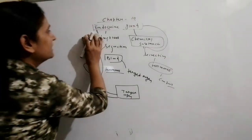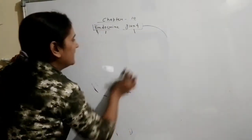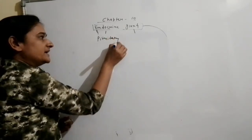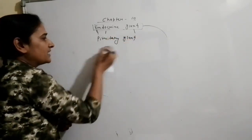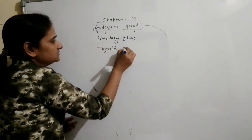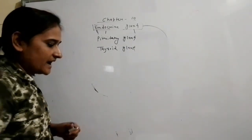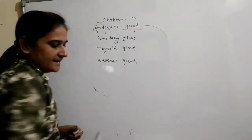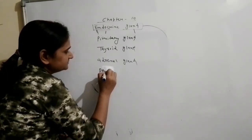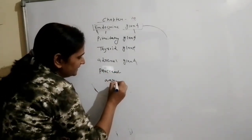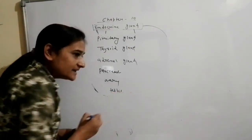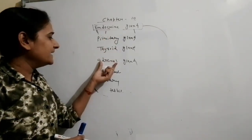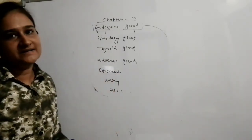Some endocrine glands are: the pituitary gland, thyroid gland, adrenal gland, pancreas, ovary, and testis. In your chapter, you will study the pituitary gland, thyroid gland, adrenal gland, pancreas, ovary, and testis.